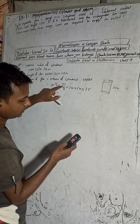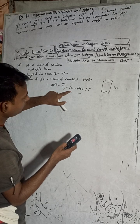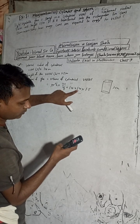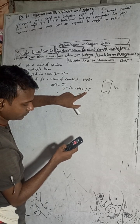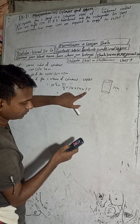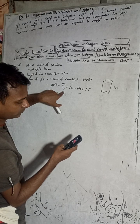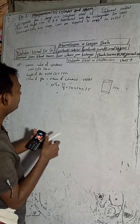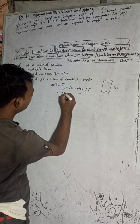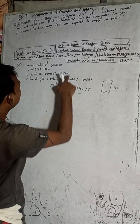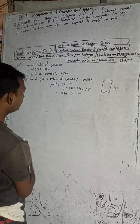So we calculate 22 × 1.4 × 1.4 × 1.5 divided by 7, which gives us 9.24. So the volume is 9.24 meter cube.